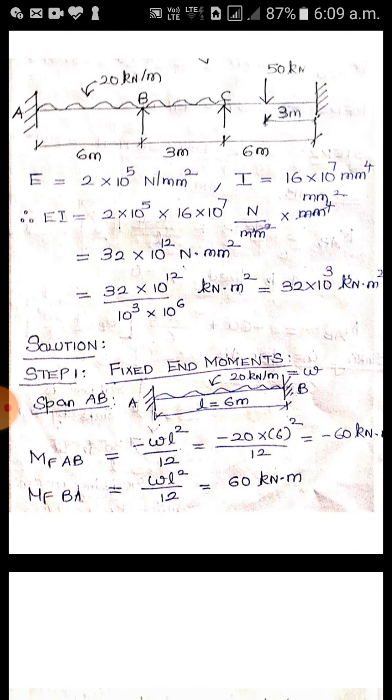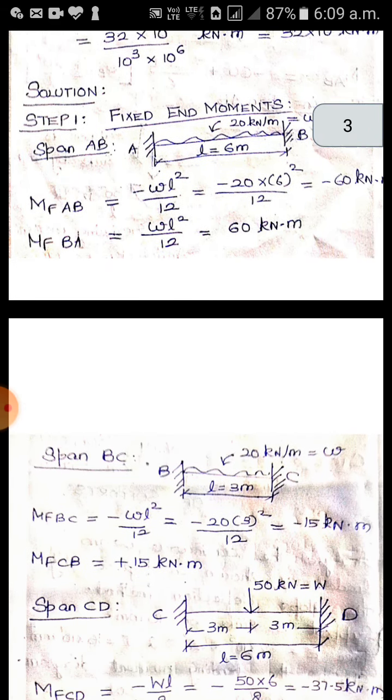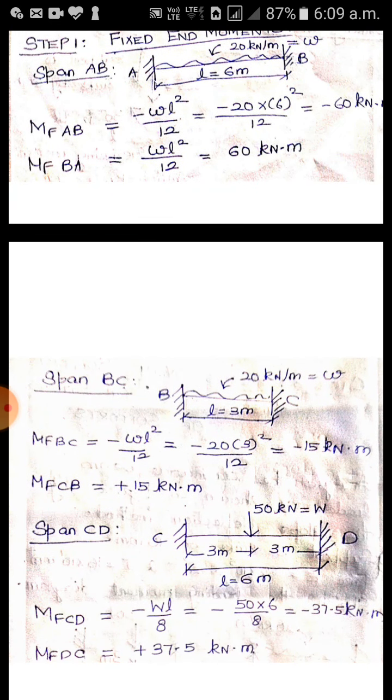Coming to the solution, step number 1, fixed end moments. Consider one span at a time. First span AB, L equal to 6 meters and W is the UDL 20 kN per meter. The formula is WL squared by 12. Apply the values: MF_AB and MF_BA. Again span BC, same load condition but L equal to 3 meters. We get the values as minus 15 and plus 15. Span CD has a central point load, 50 kN acting in the center. The formula is WL by 8, not WL squared by 8. Capital W is the point load. So calculate the values.